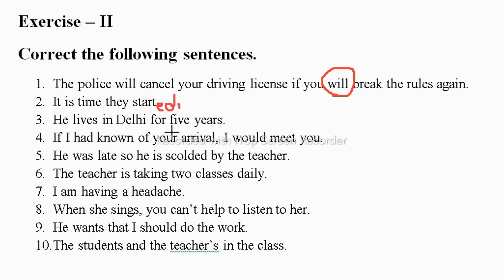'He lives in Delhi for five years' — since he is still living there, this is present perfect continuous: 'he has been living in Delhi for five years.' Next: 'If I had known of your arrival I would meet you' — this needs 'would have': 'I would have met you.' Then: 'He was late so he is scolded by the teacher' becomes 'he was scolded by the teacher.'